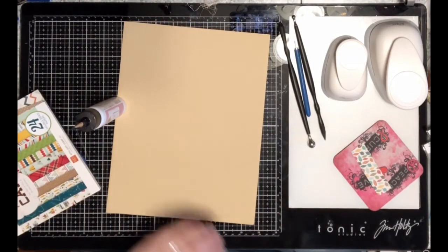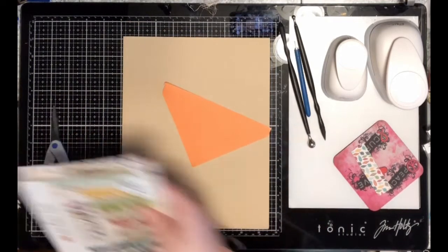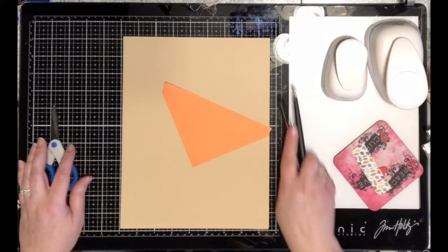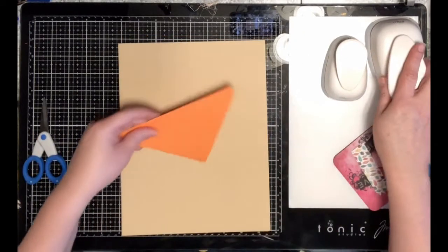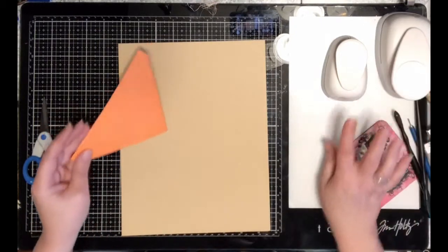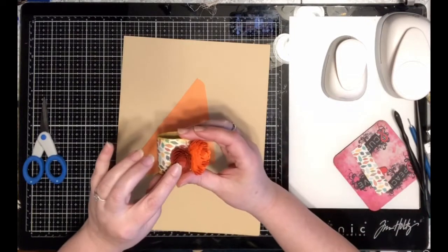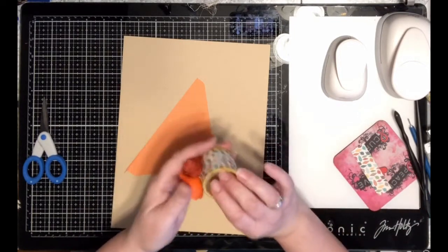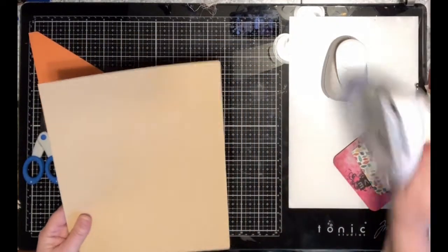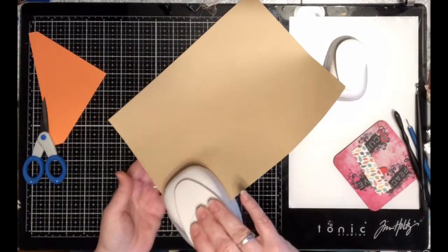First thing you're going to need is some cardstock and a hole punch, circle punch, or draw yourself some circles. You're going to need about eight per mum if you want a nice full mum. You're going to need about eight punches for these mums. Let me show you how these work. I'm going to go ahead and just do some punches.